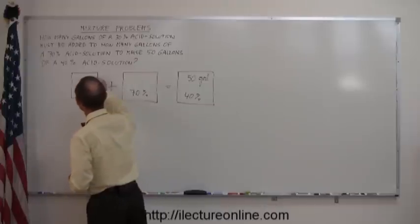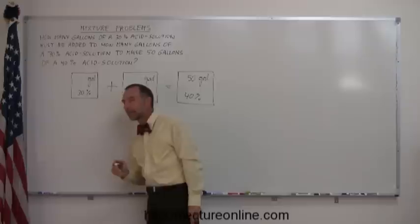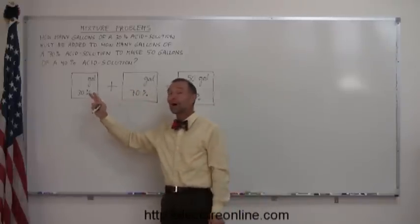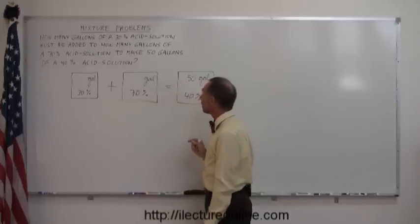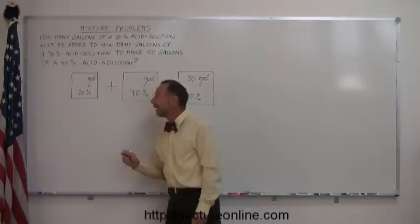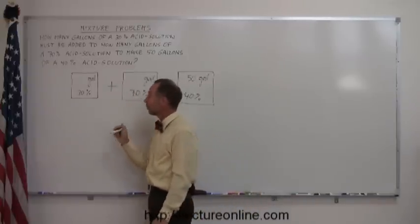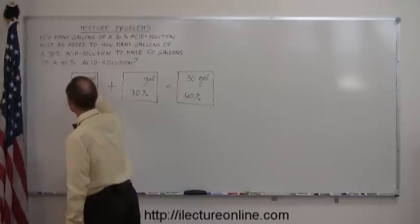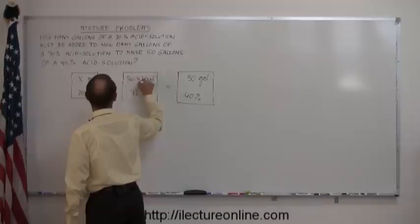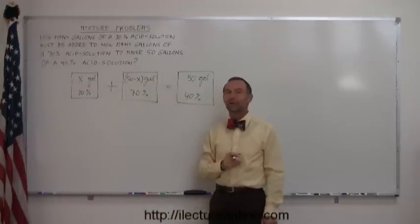So, how many gallons do we have here? And how many gallons do we have here? Now, if there's two different kind of solutions you're adding, and you don't know how much of each you use, you typically let x be the amount you have of the one solution, and the total minus x be the amount you have of the other solution. So, this you write in x gallons of that solution, and the total 50 minus x be the amount of the other solution. And now you're ready to start solving the problem.